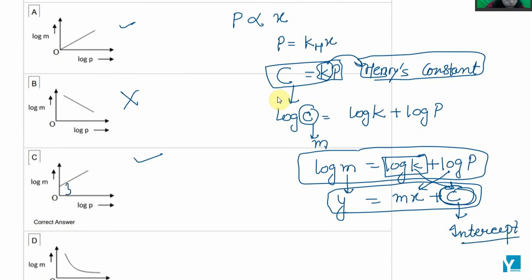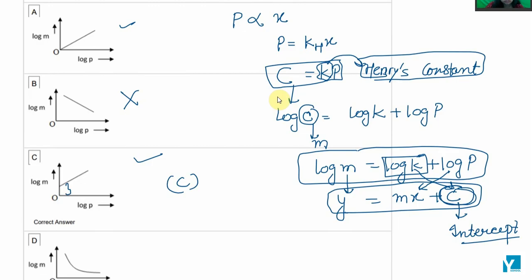So here we can see some intercept. That's why curve C correctly represents Henry's law, and it is the right answer. Thank you.